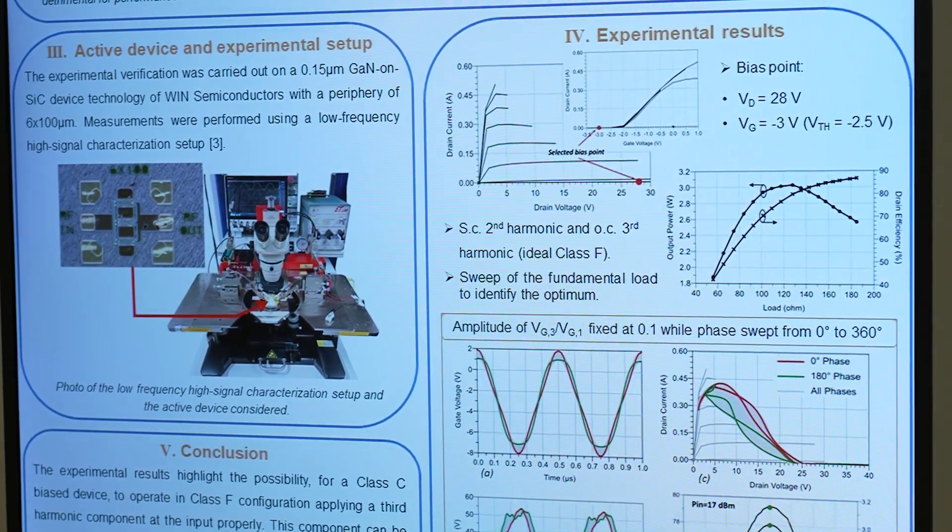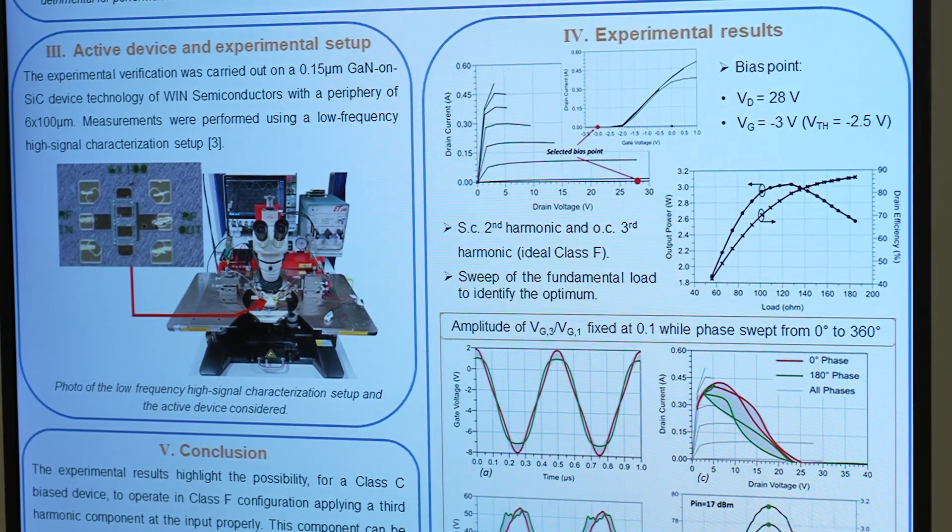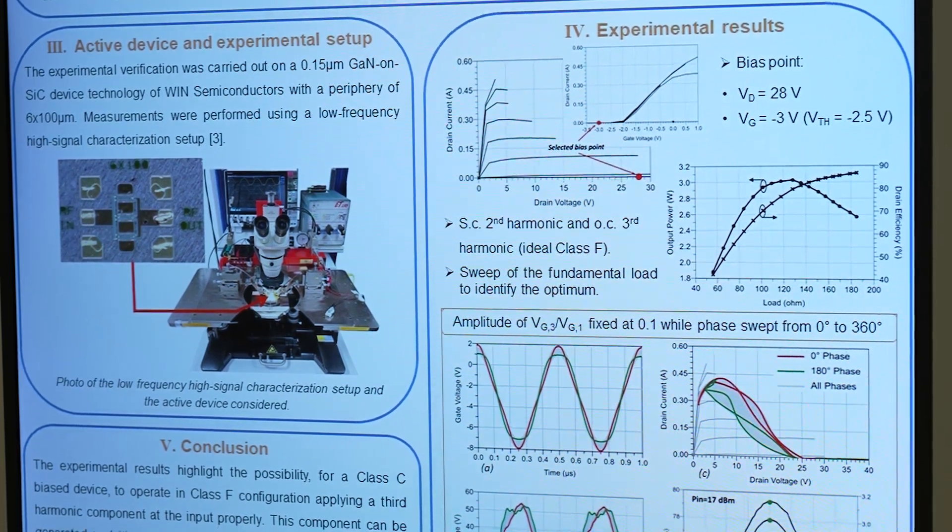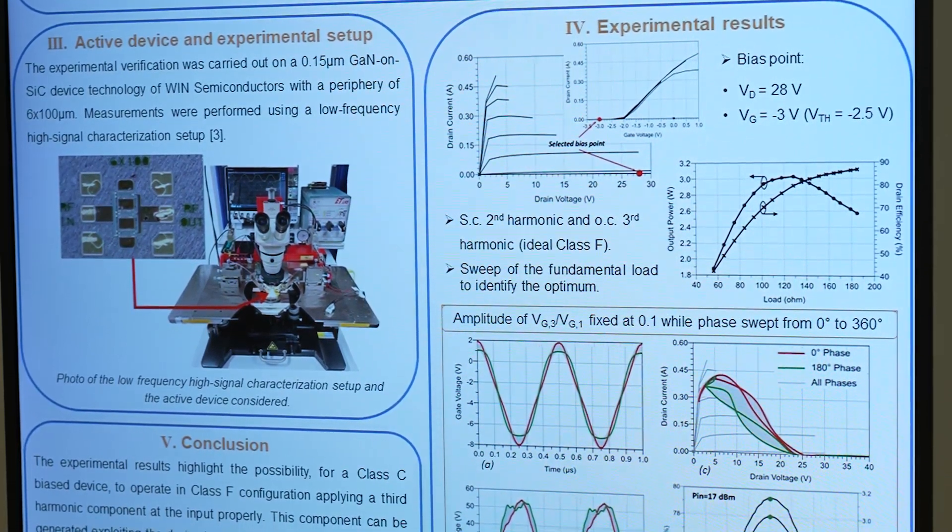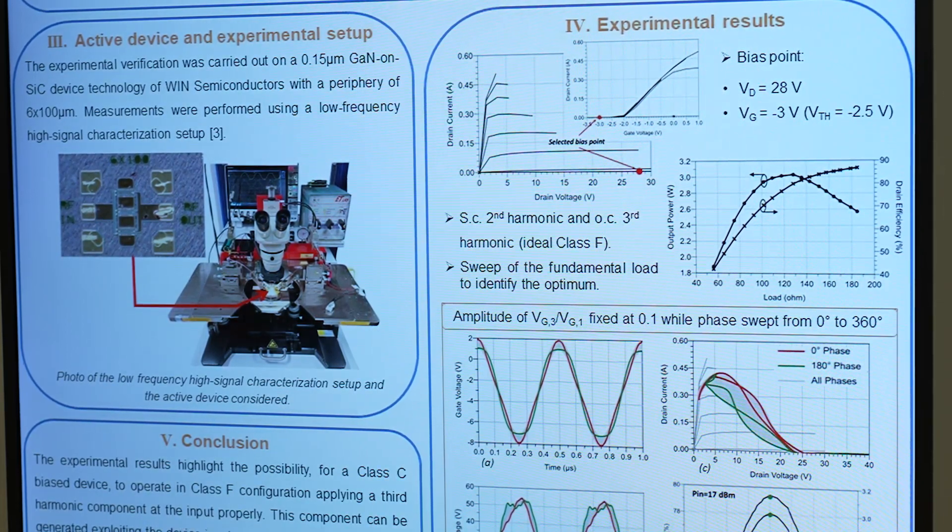The measurements were performed using a low frequency large signal characterization setup. So the device was biased at a gate voltage of minus 3 volts, so 0.5 volts below the pinch-off in Class C.